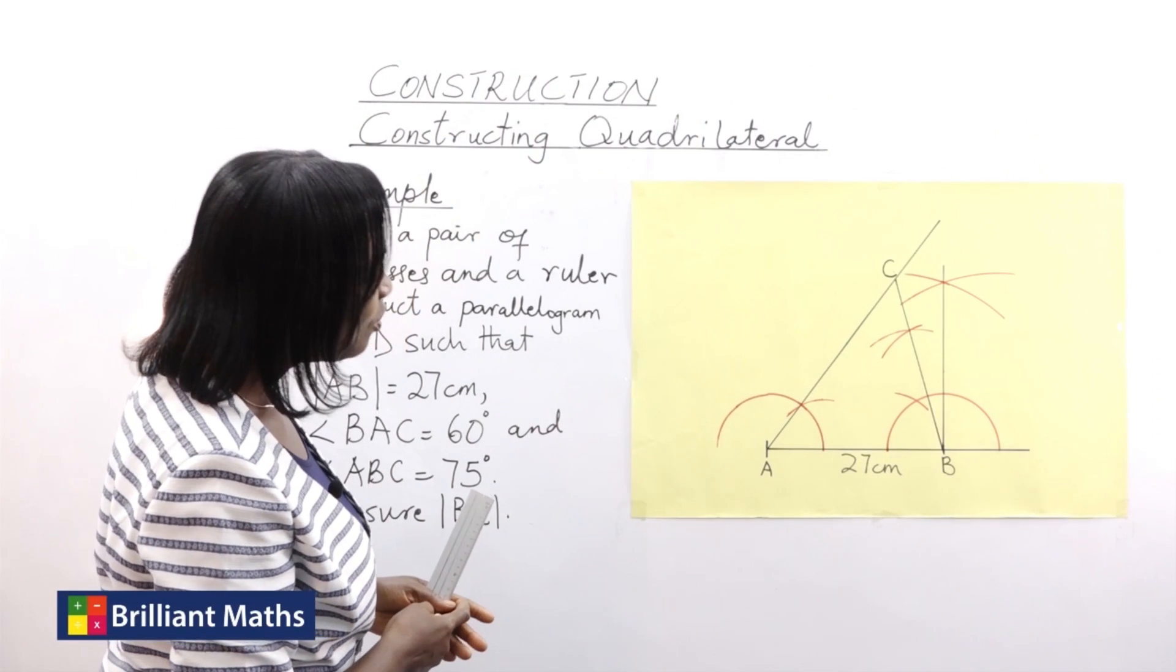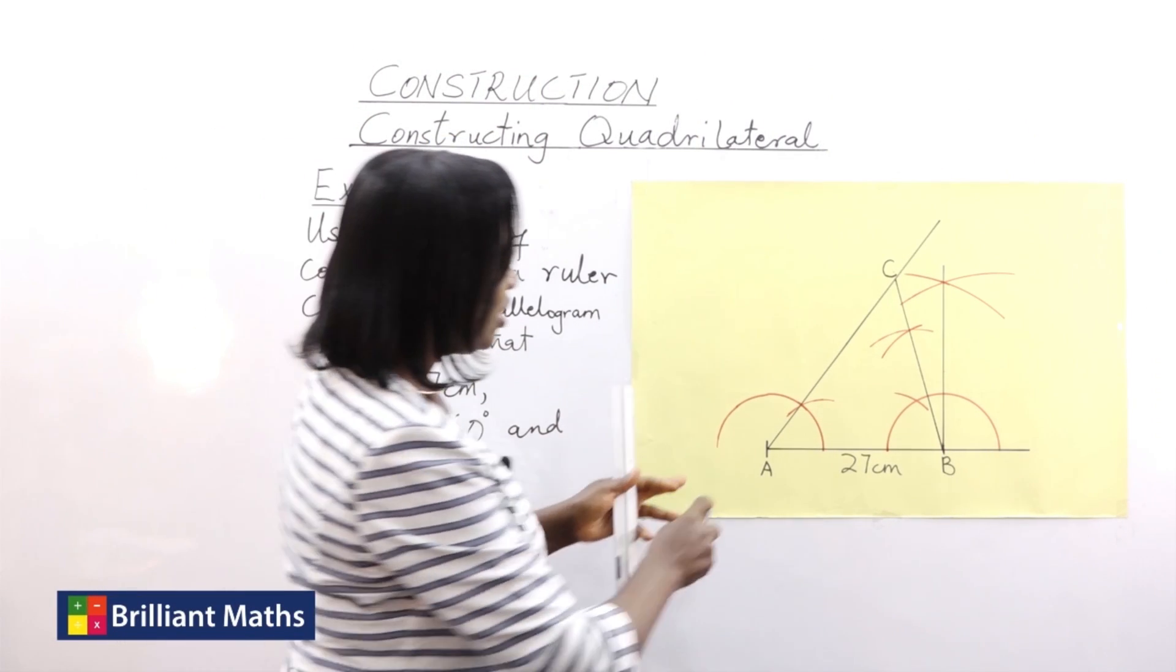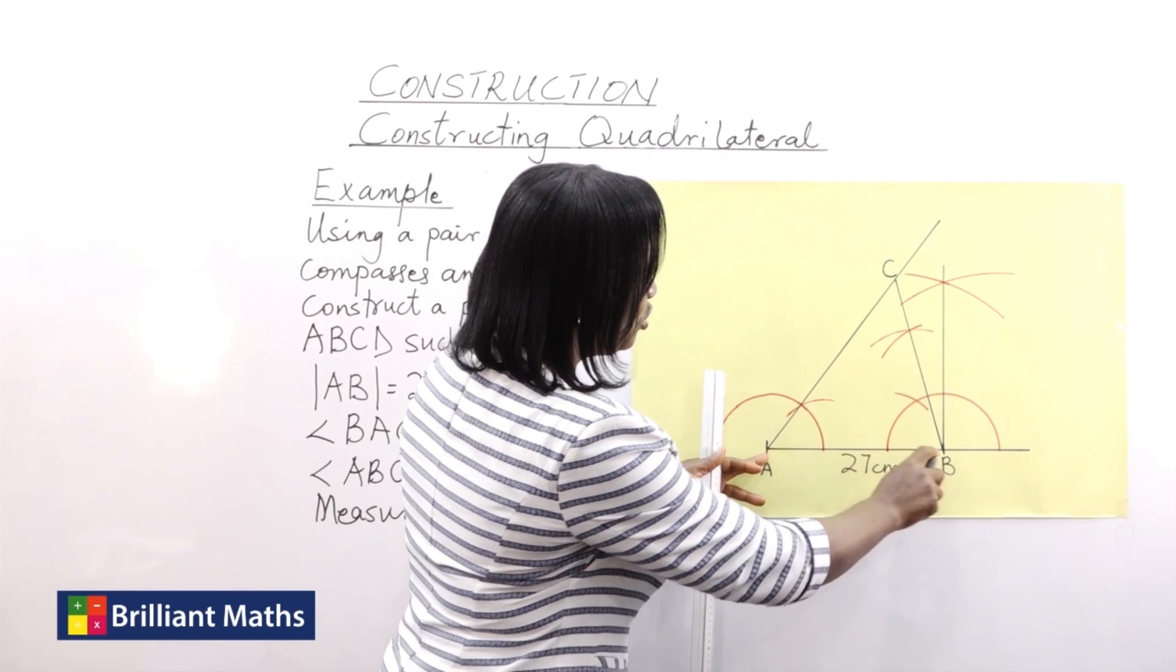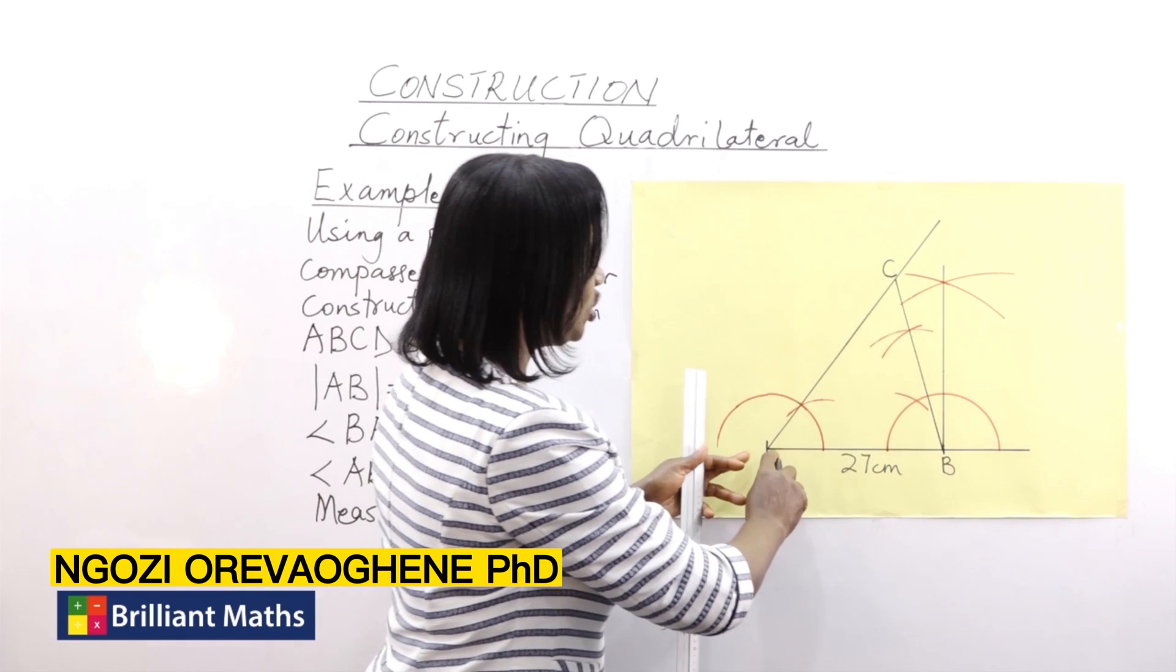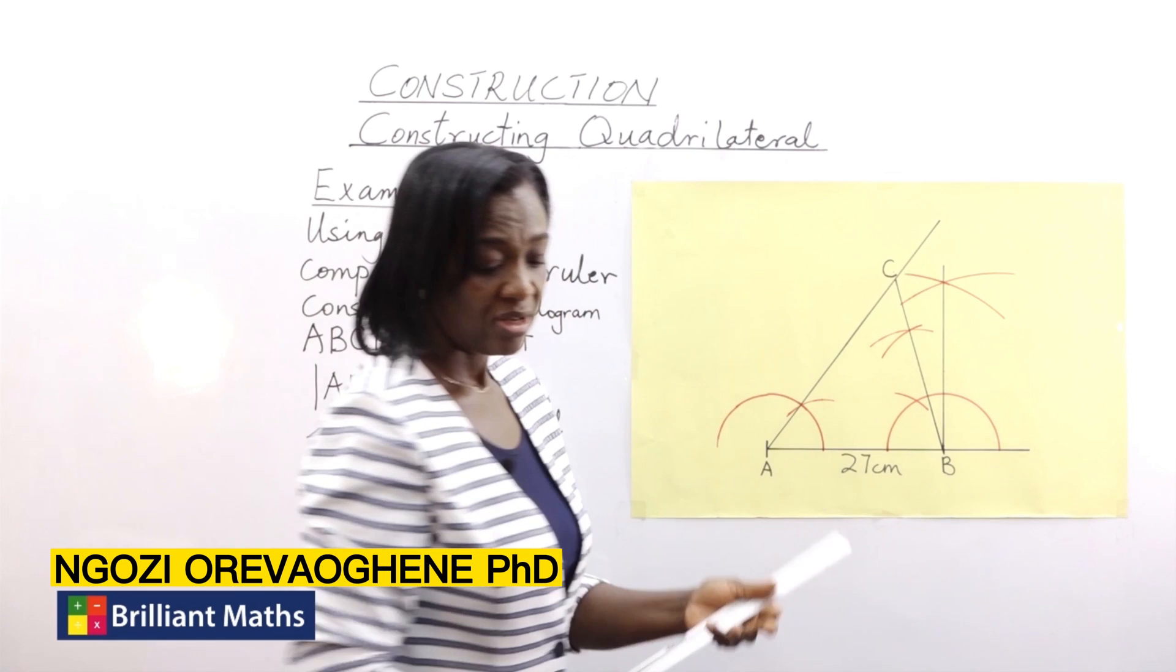So next, what do we do? The next line I need to draw is the line CD and it's supposed to be equal to 27 centimeters.